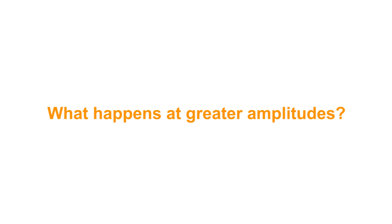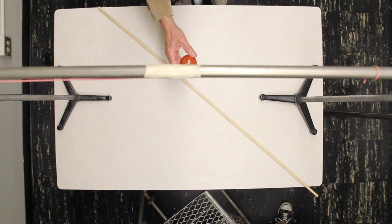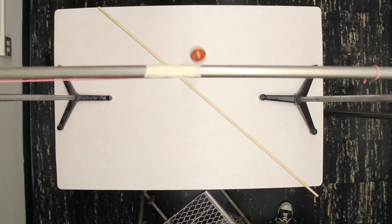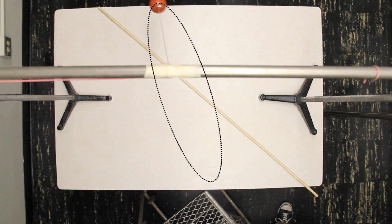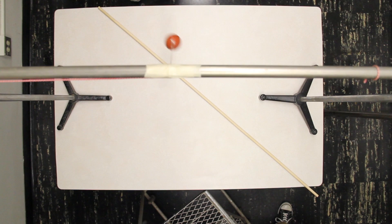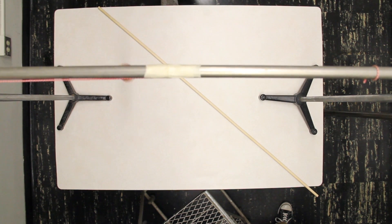But what happens at greater amplitudes? As you can clearly see, the orbit no longer closes on itself. The motion is not strictly an ellipse, but can be considered as a steadily rotating ellipse. This behavior is called precession. In general, the motion never repeats. This occurs even for small amplitudes, but it is much weaker, so it is difficult to notice unless you observe many revolutions of the mass.